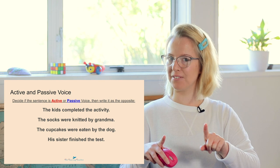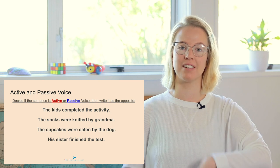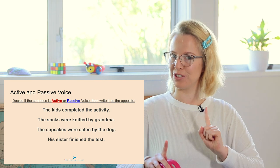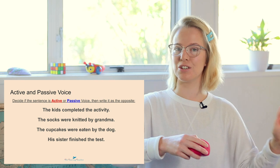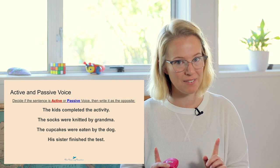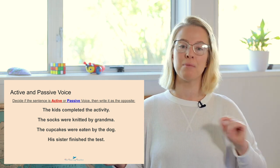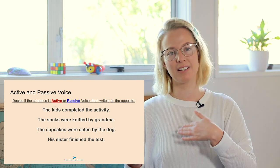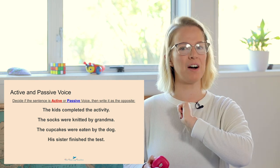Now it's time for your first activity. There are four sentences on the screen and you need to figure out whether each is an active voice or passive voice sentence. If you want to extend yourself, you can rewrite each active voice sentence as a passive voice sentence. Make sure you pause the video because the answers will come afterwards. You can go back in the video to review active and passive voice, or you can test yourself right now. Good luck.